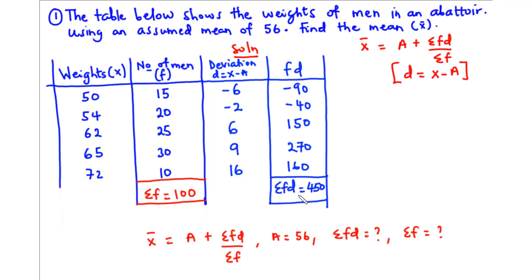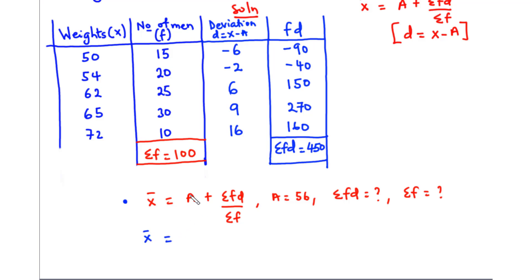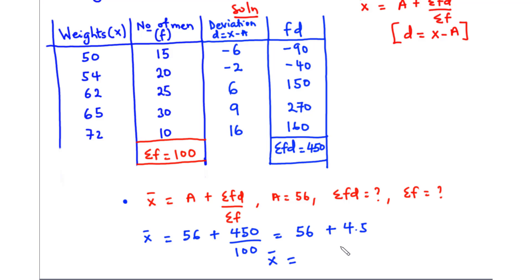Since we now have Σfd and Σf, we can plug these into the equation to find the actual mean. So x̄ = 56 + 450 / 100. That equals 56 + 4.5 = 60.5. The actual mean for this distribution is 60.5. This is how to find the mean of a dataset using the assumed mean method.